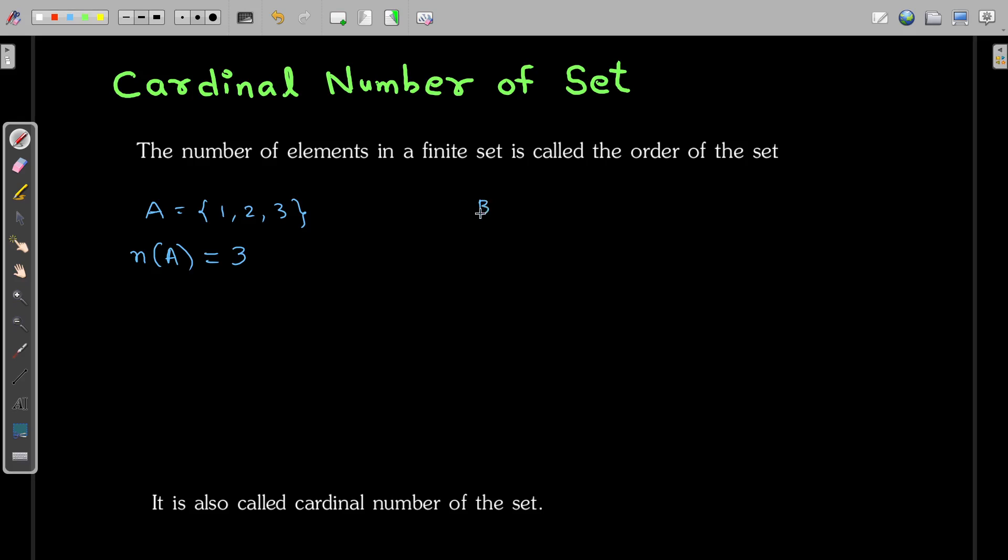Now, consider this set B. Even if I repeat the elements, that is 1, 2, 3, 3, 4, then 7, 7, 7. If you observe here, 1, 2, 3, 4, 5. There are 5 elements in this. Although there is repetition,